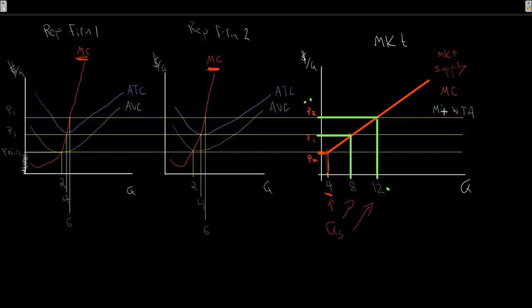This wraps us up for producer theory for the time being. We're going to be jumping over to the consumer next week - taking a look at their consumption decisions, and from those decisions we'll work out their demand for goods. From that demand, instead of minimum willingness to accept, we'll work out the maximum willingness to pay. We'll ultimately bring that demand curve together with our supply curve and use this supply and demand model to analyze equilibrium price - what is our market clearing price and how much stuff is bought and sold altogether.